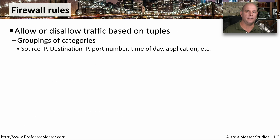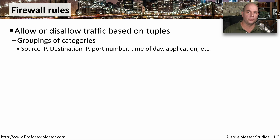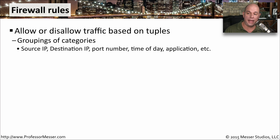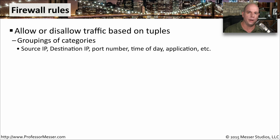The access list inside of a firewall can be based on a number of different criteria. It's common to see these groupings of criteria, which we call tuples — things like a source IP address, a destination IP address, a port number, time of day, or a particular application in use. You can use any one or a combination of these tuples to determine whether to allow information to pass through the firewall or block it right at the firewall.